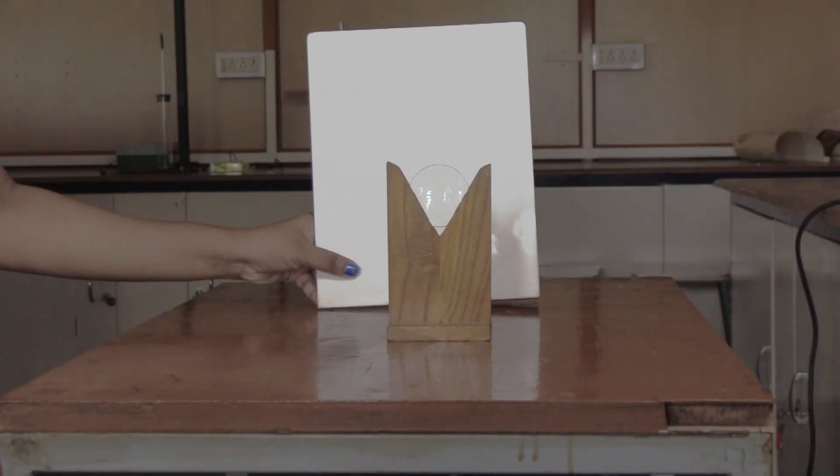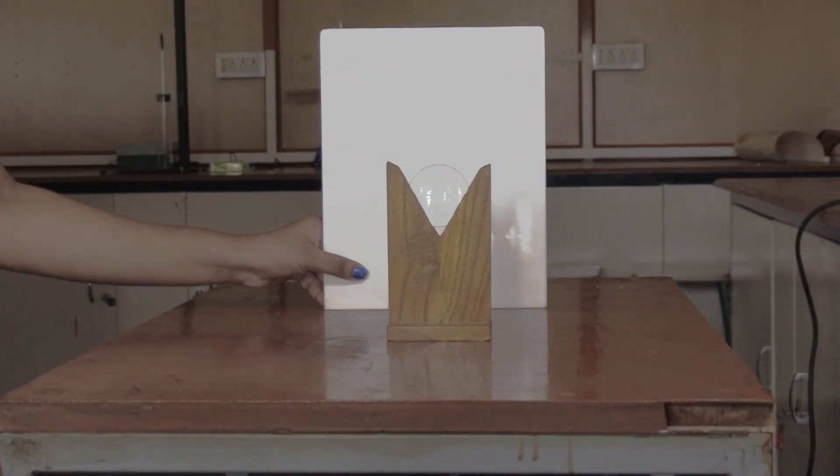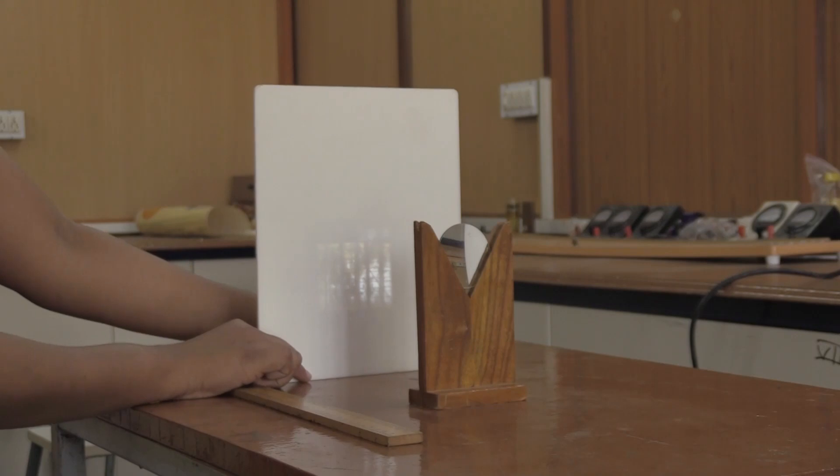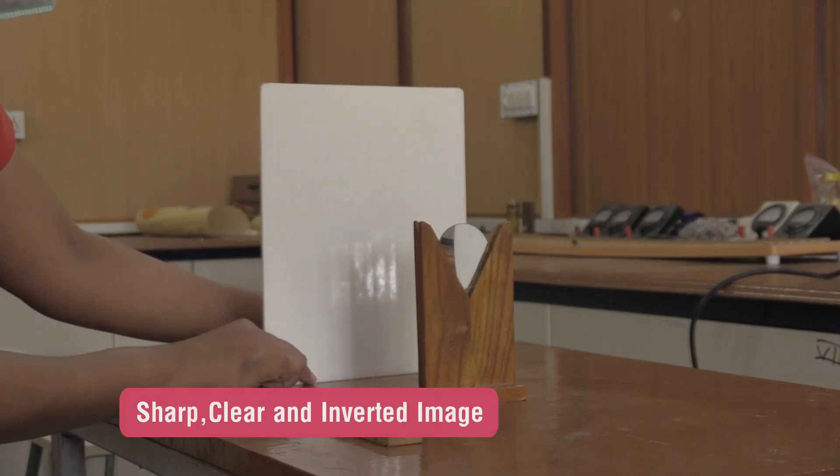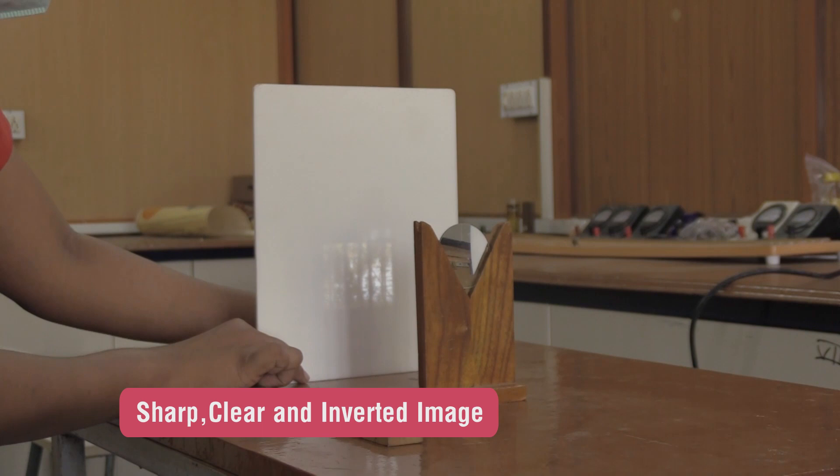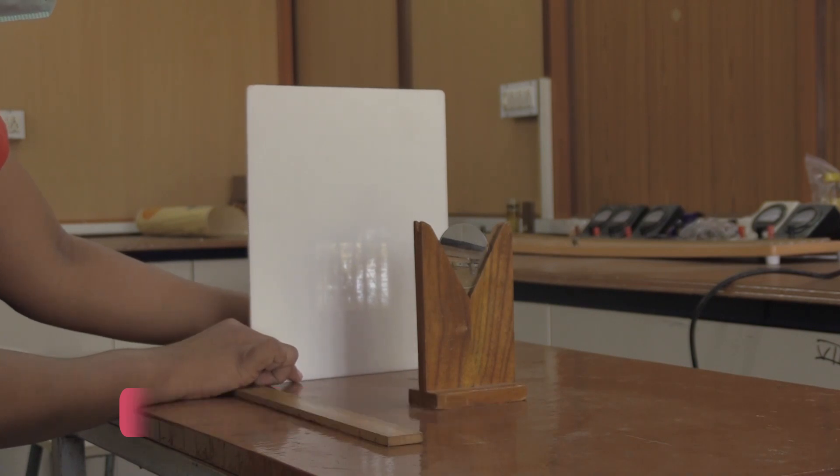Place a screen fixed on a stand on the other side of the lens. Move the screen back and forth to obtain a sharp, clear and inverted image of the distant object.